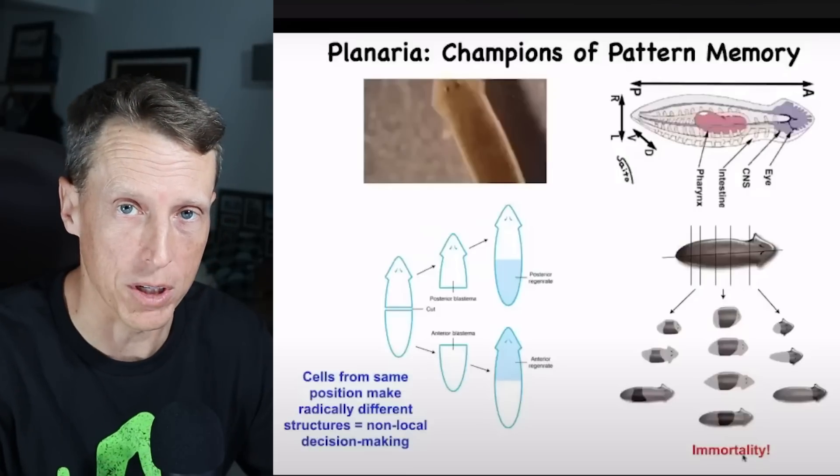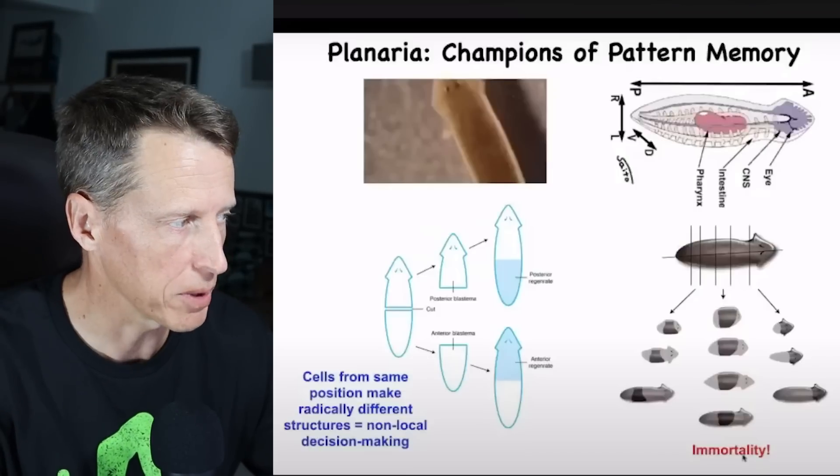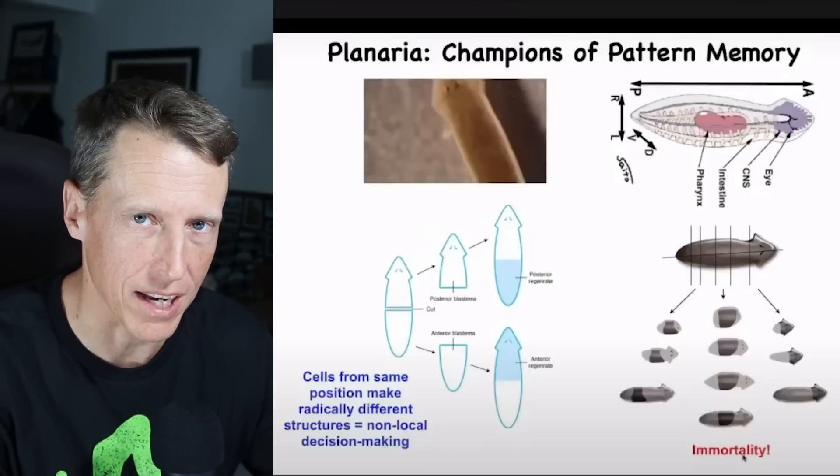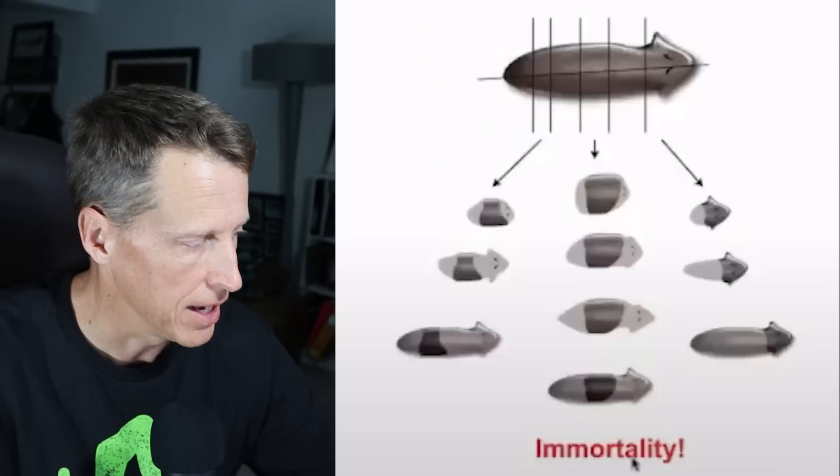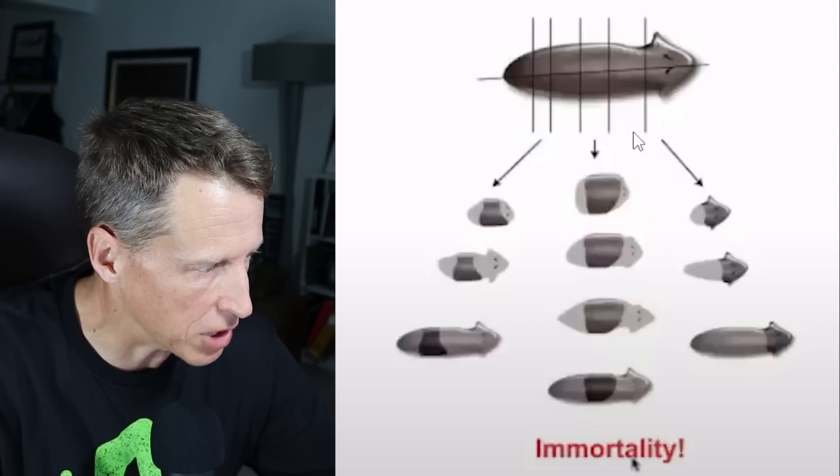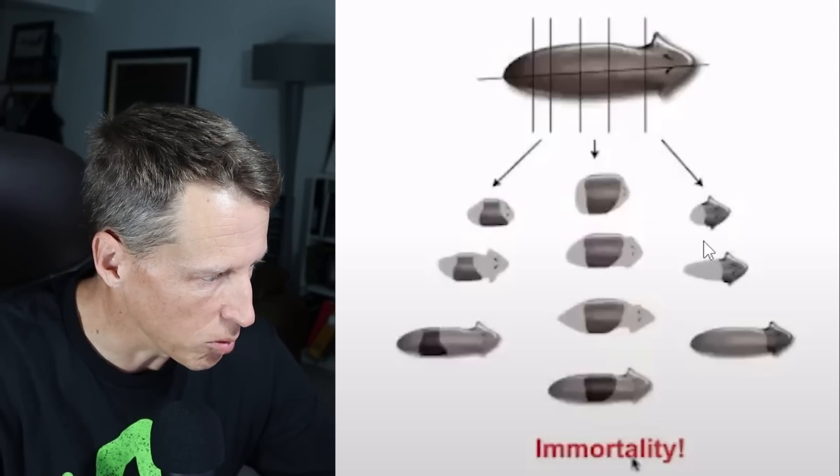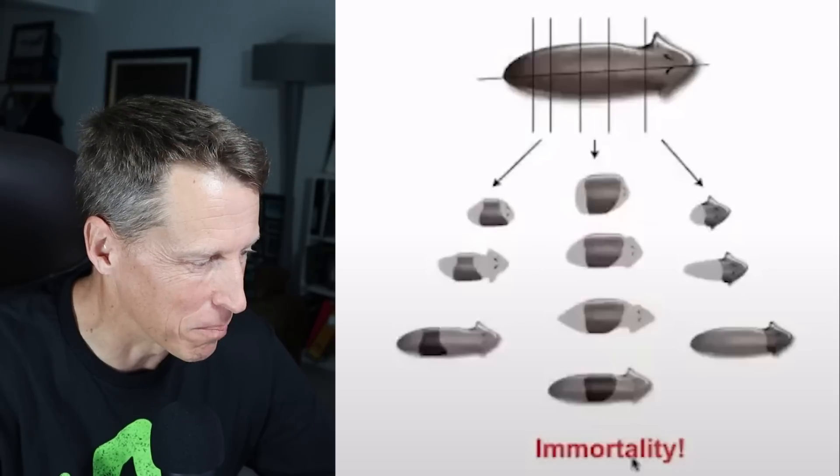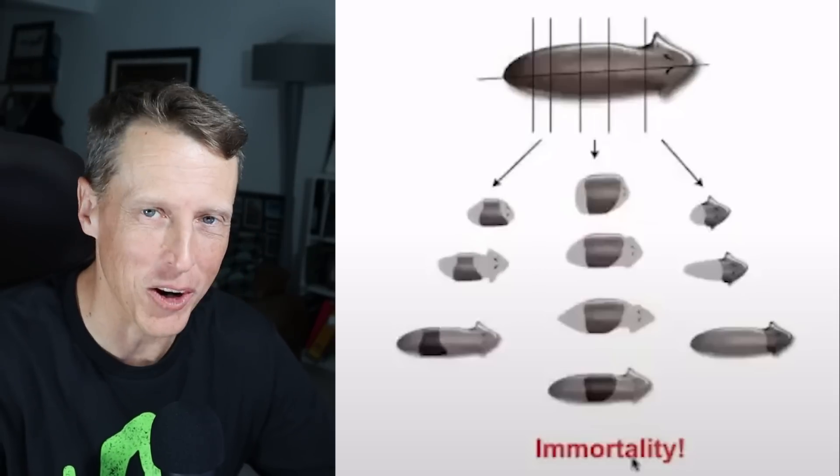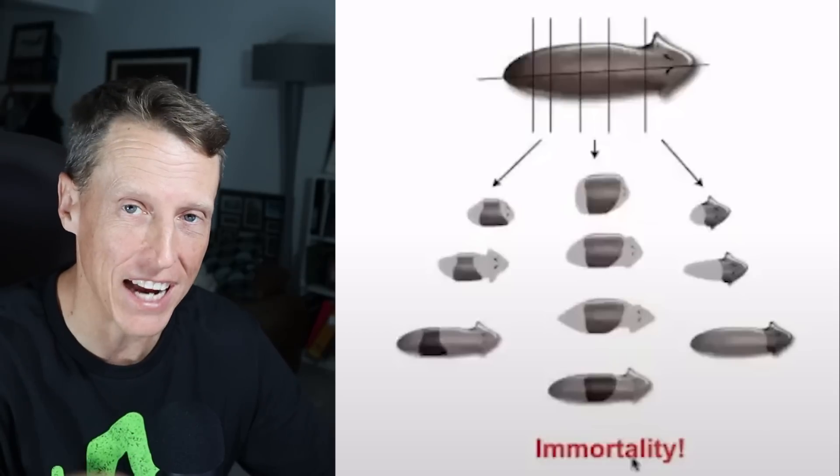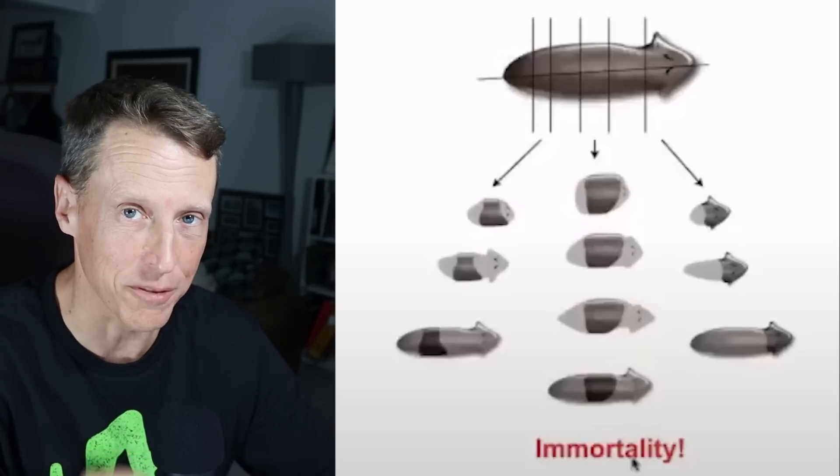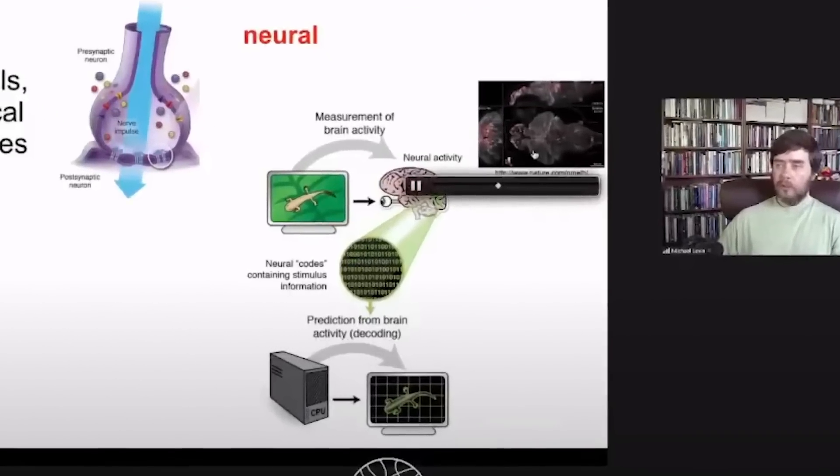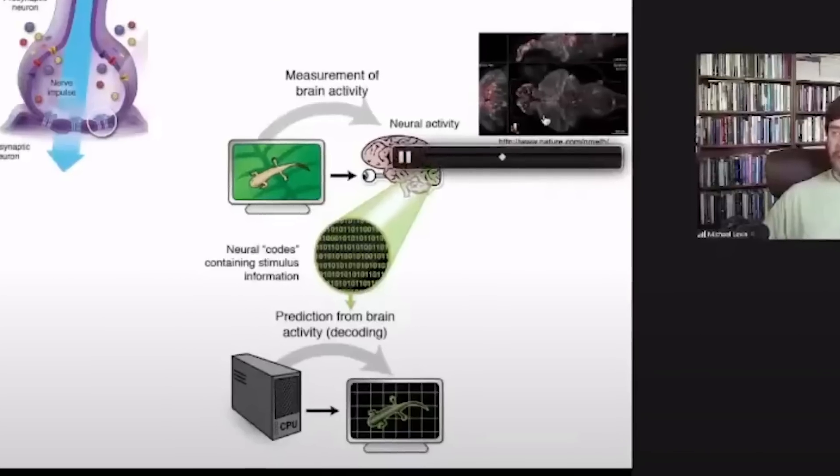I highly recommend watching this whole briefing by Michael Levin. He explains planaria, the champions of pattern memory. How does memory actually work? How do biological systems remember things? It doesn't matter how you cut these cute little worm guys, they will regrow back to the full planaria shape. They are immortal. He found ways to code for this in different organisms. Where is that information held? Michael Levin says it's not in the DNA.